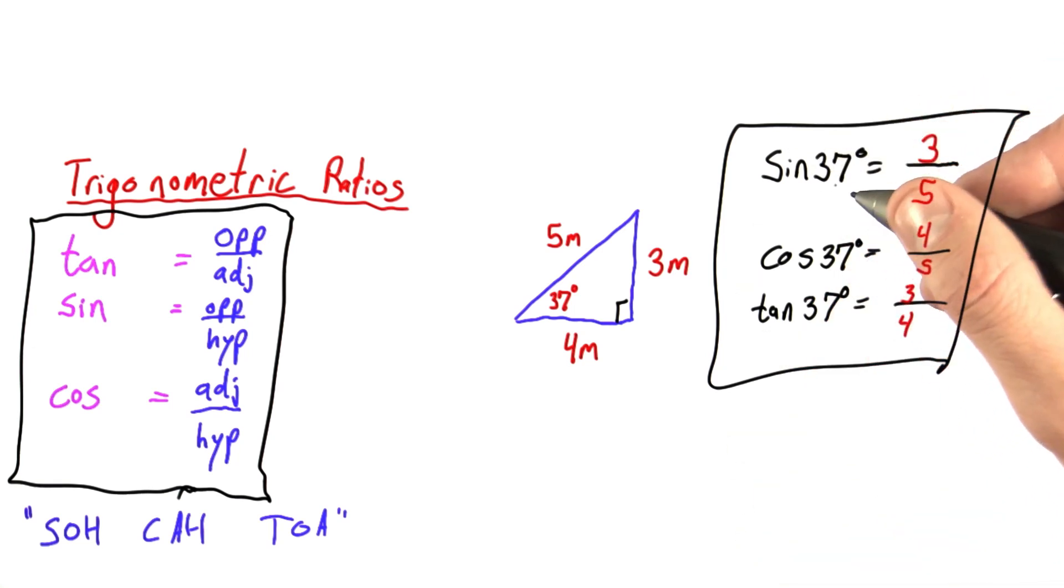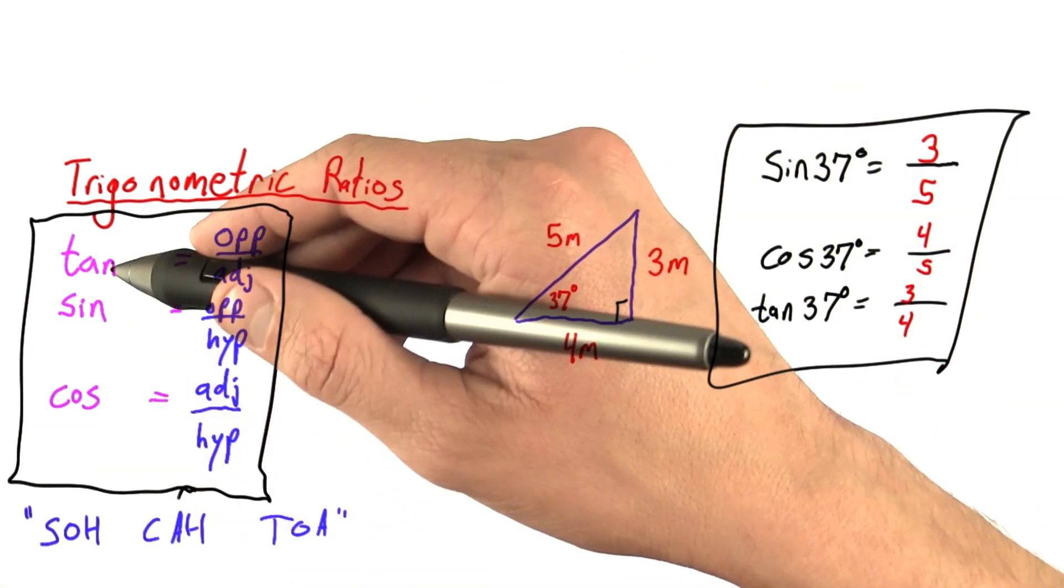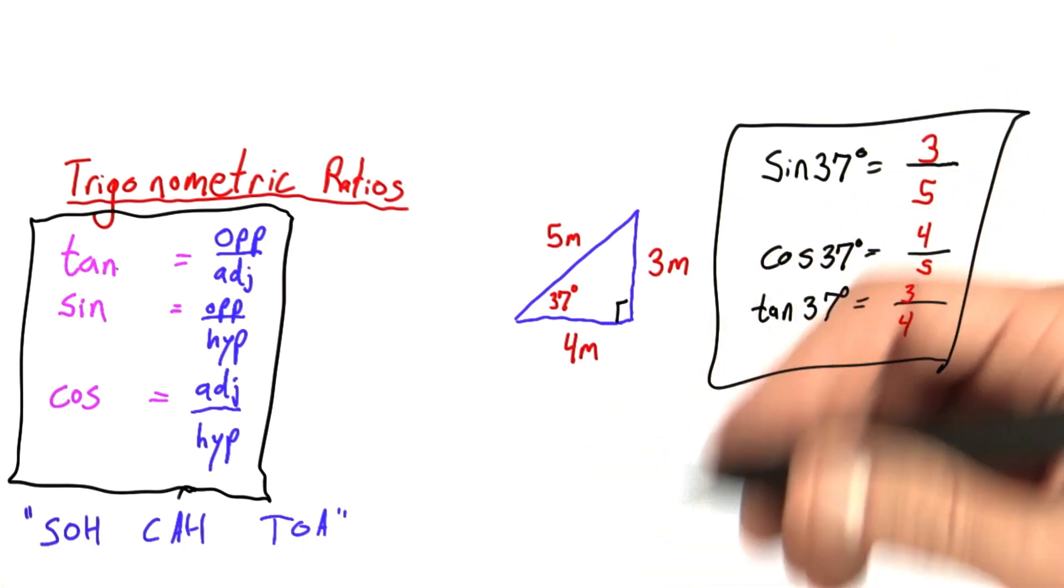So what they did in Eratosthenes' day was calculate large tables of trigonometric ratios. They would find the sine, cosine, and tangent of a variety of angles and save it away for future reference.